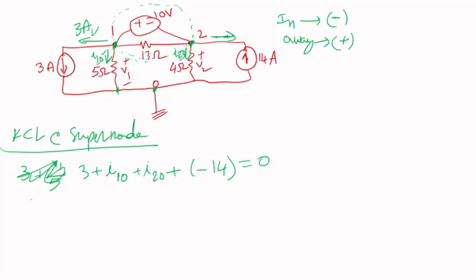So then I can rearrange. So 3 plus, from Ohm's law, the current, this current here is just the voltage from here to here, which is V1 divided by the resistance. So that's 5.